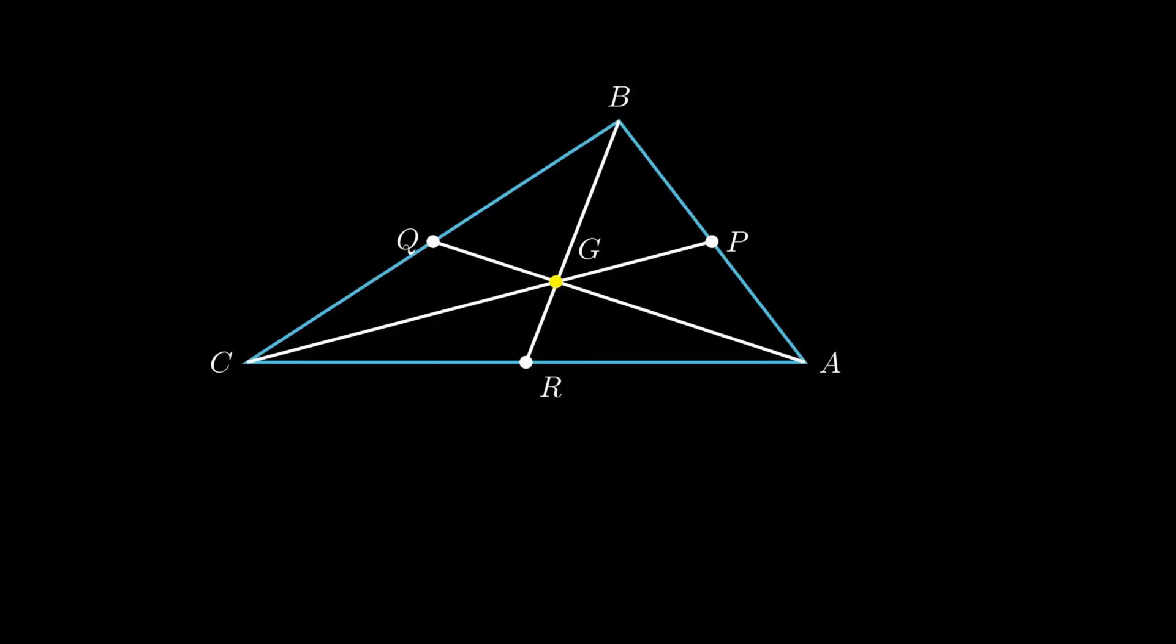we need to extend GR to point S such that segment GS is equal to segment BG. On joining point C and A to point S, a quadrilateral AGCS is obtained.